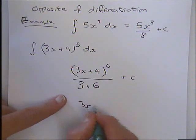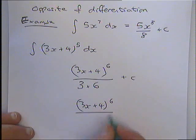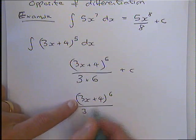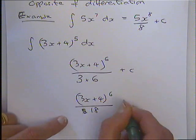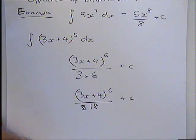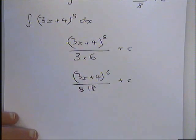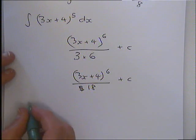So, that becomes 3x plus 4. We add 1 to the power and we divide by what was in front of the x and that power. Times together. So, there that will be 18 plus c. Okay? Sorry, thank you for telling me. Okay? So, that is what we do. It is very much the reverse of the other one.